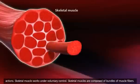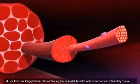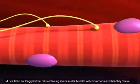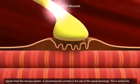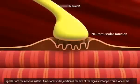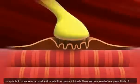Skeletal muscles are composed of bundles of muscle fibers. Muscle fibers are long cylindrical cells containing several nuclei. Muscles will contract or relax when they receive signals from the nervous system. A neuromuscular junction is the site of signal exchange — this is where the synaptic bulb of an axon terminal and muscle fiber connect.